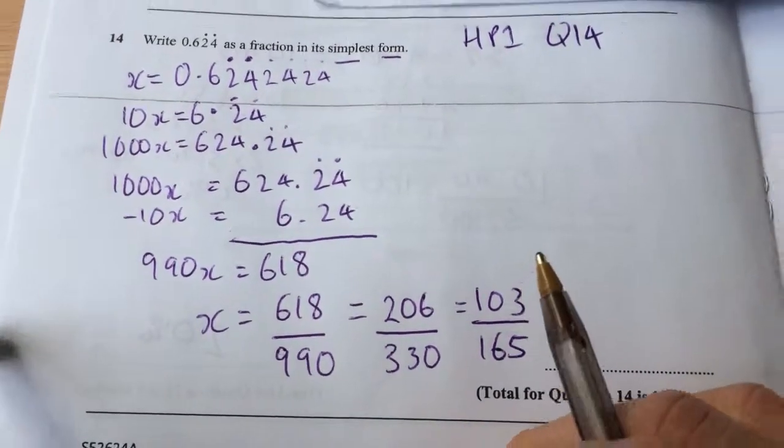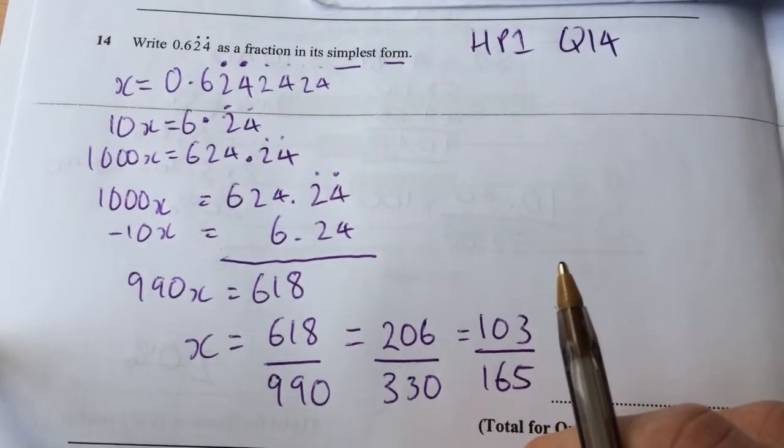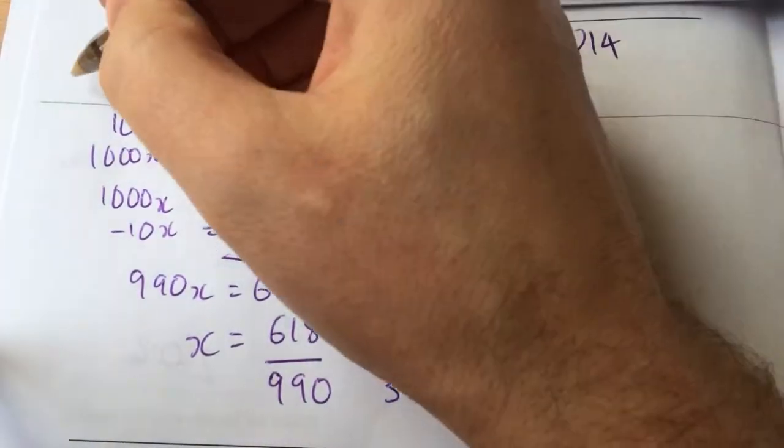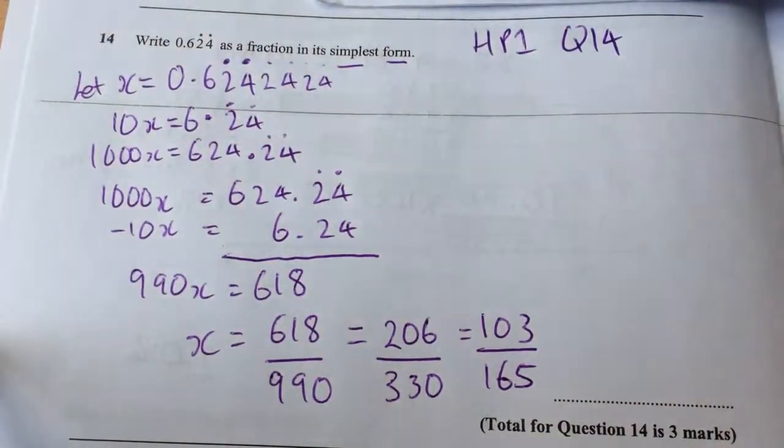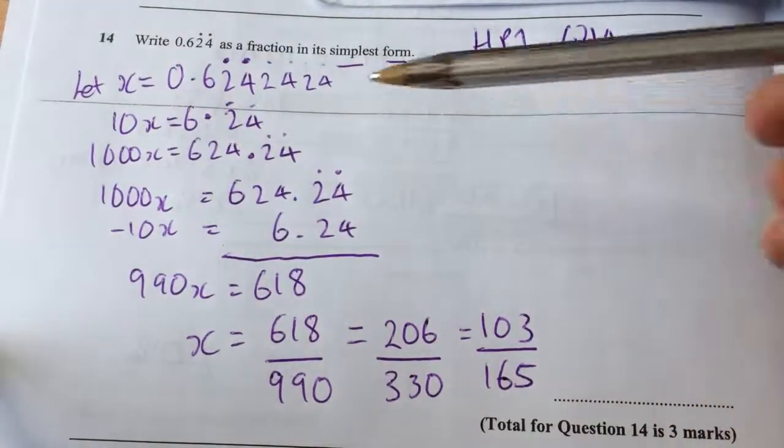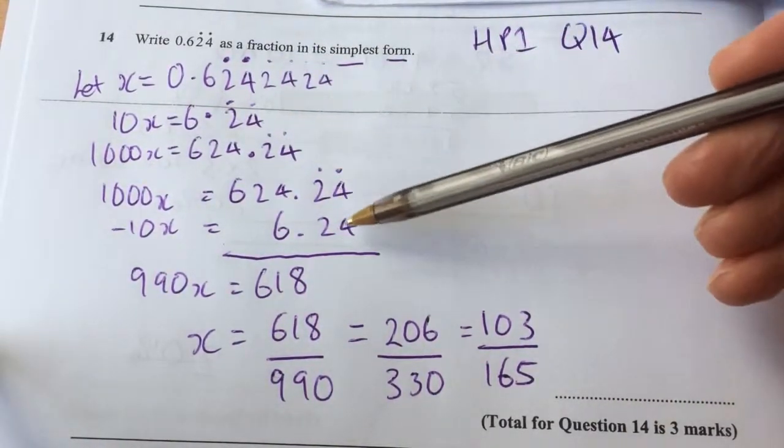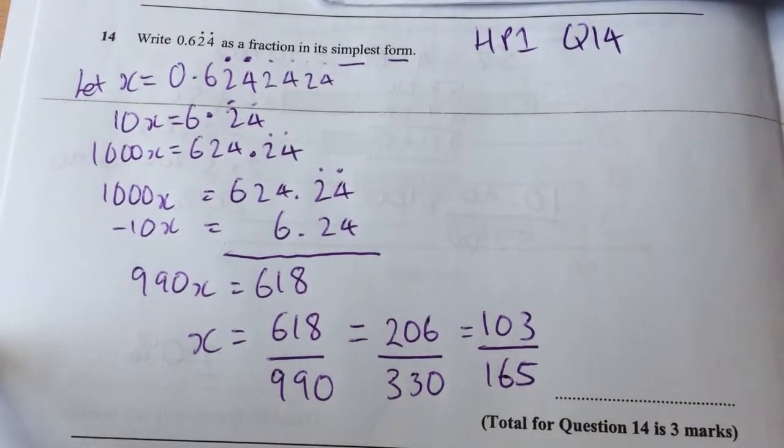So there we go, changing a recurring decimal into a fraction using a technique of let x be that recurring decimal, multiplying by 10 and 1,000 so the recurring parts fall away. Thanks for watching.